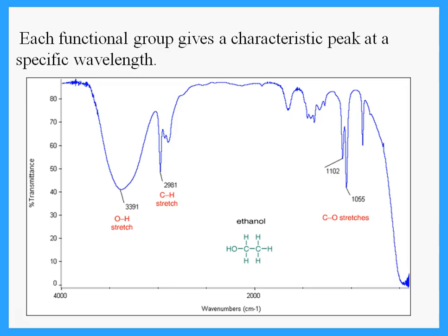We will have a spectrum and our job is to decide if it has a certain structure by the presence of certain peaks. Notice that this spectrum is for ethanol — can you see the peak for the OH? If I look at a spectrum and find a broad peak in that area at around 3300, that means this must be an alcohol.